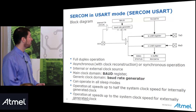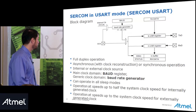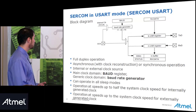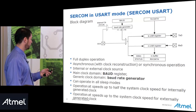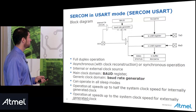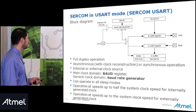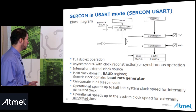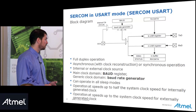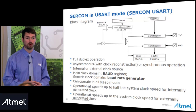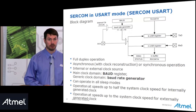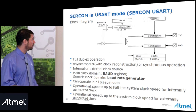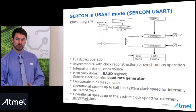The UART also has double buffering on receive: first an RX buffer, followed by an RX data register where the data is finally available to your application. Full duplex operation is supported, asynchronous with clock reconstruction or synchronous. Internal or external clock sources are available. In the main clock domain we have the baud rate register and in the generic clock domain we have the baud rate generator. Operation in all sleep modes is supported, at speeds up to half the system clock for an internally generated clock (24 megabits per second) and up to the system clock speed for an externally generated clock. That concludes our initial presentation on the serial communications module.